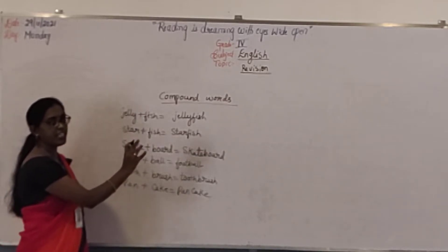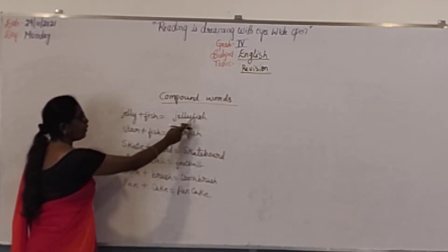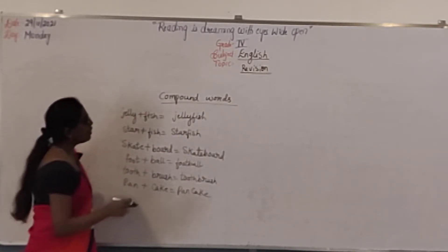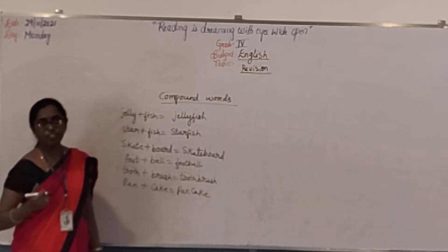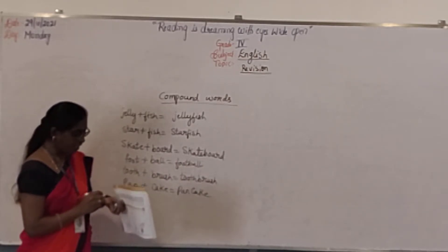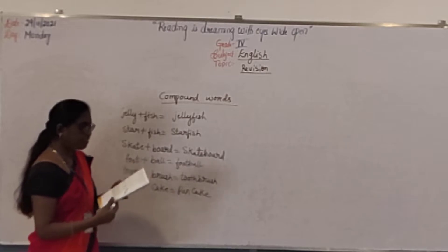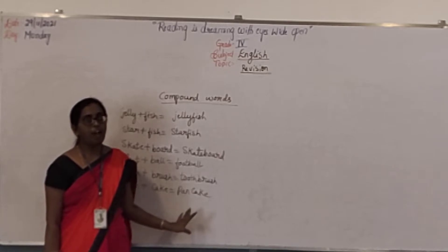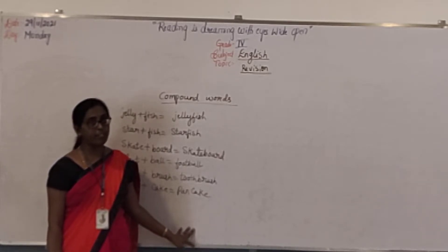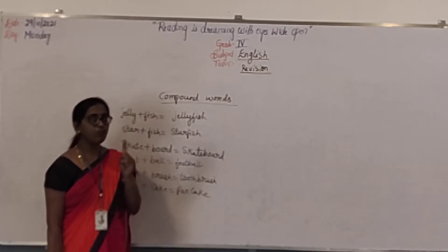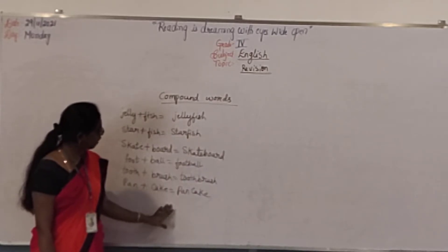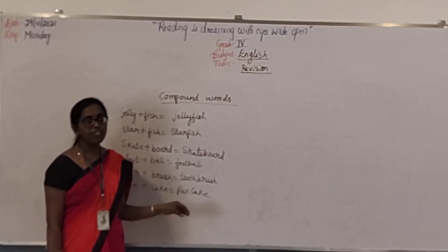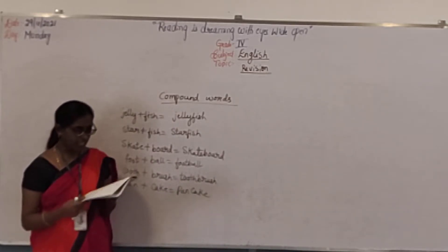Listen, children. Two different words when you join together, it means one word. So that becomes a compound word. Understood, children? Hope you are understanding, right. What you have to do is write examples of compound words — that is one more classwork. Now you can write this in your classwork book.